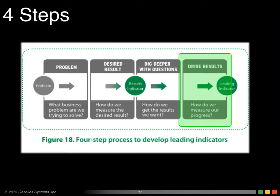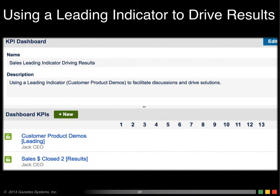Then of course, we apply red, yellow, green. Let's say you want to do two demos a week — that's green. Four demos a week would be your stretch goal — that would be super green. Zero is unacceptable — that's red. Yellow is in between red and green. Finally, we want to put these two indicators on a dashboard and use it for your 13 weeks. Now you're ready to look at this dashboard and push on these two KPIs over the next 13 weeks, focusing on your leading indicator of number of customer product demos.